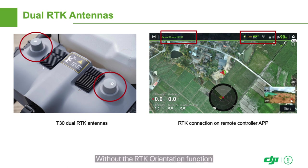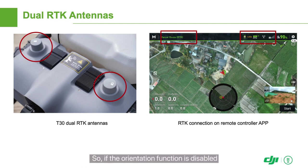The RTK antennas also prevent electromagnetic interference even when the drone is under high voltage lines. Without the RTK orientation function, the drone will need to rely on its compass. So if the orientation function is disabled, you must calibrate the compass.